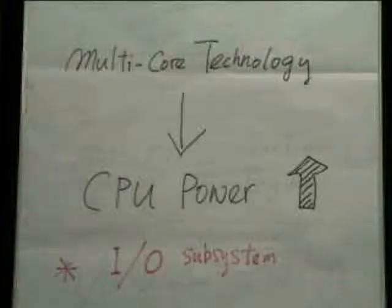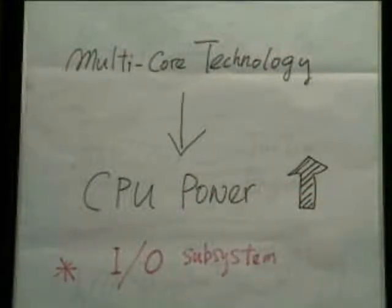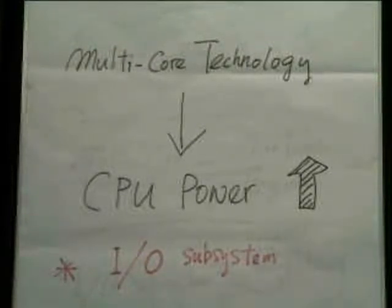When an IT manager plans to purchase new servers, performance is one of the key selection criteria. With that in mind, multi-core technology is certainly the trend in processor design and is expected to help improve the server performance. Multi-core technology combines several calculation cores into a single IC chip. However, multi-core technologies can only improve the CPU power, which is only one of the key factors to determine the overall server performance.